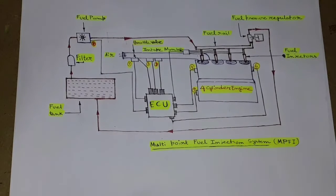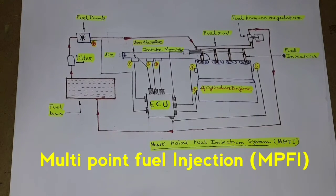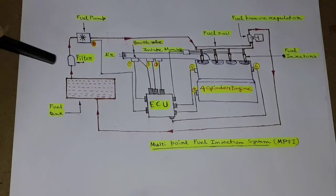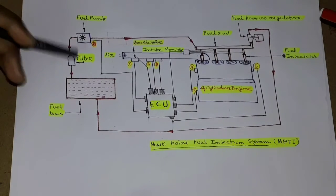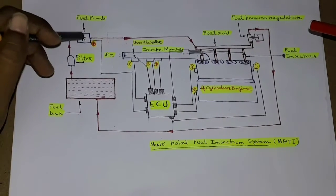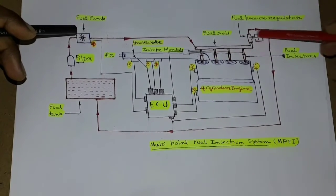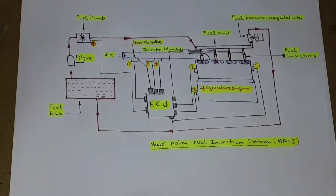Here we have a schematic diagram of multi-point fuel injection system, which is also known as MPFI. Now let us see its components. First, here is fuel tank, then here is the fuel filter. It is known as fuel pump, and here it is known as fuel rail.